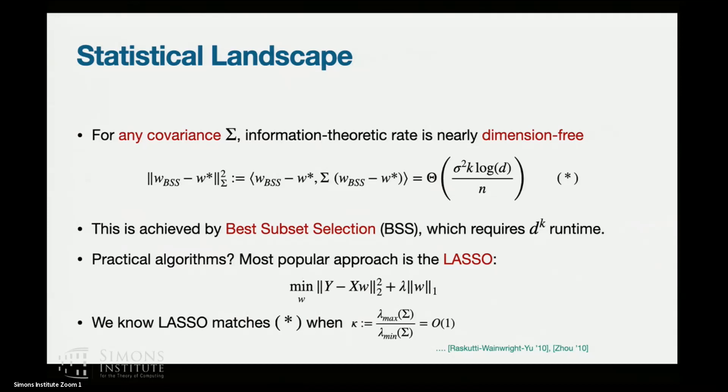And this problem has actually very simple behavior statistically. So for any covariance matrix sigma, the information theoretic rate is nearly dimension-free. For the Mahalanobis norm, you get sigma squared k log d over n. The important thing is that it essentially does not depend on the dimension. So if you have a very sparse vector, you're going to get a way better sample complexity by having this sigma squared k over n versus if you do ordinary least squares, you'll have sigma squared d over n. This is a really great statistical guarantee, but it's not computationally efficient. So the estimator which achieves this is called best subset selection. It searches over all sets of size k that could be the possible support, so it requires d to the k runtime.